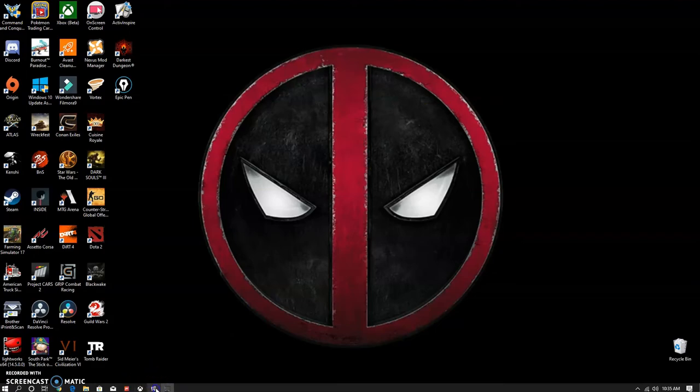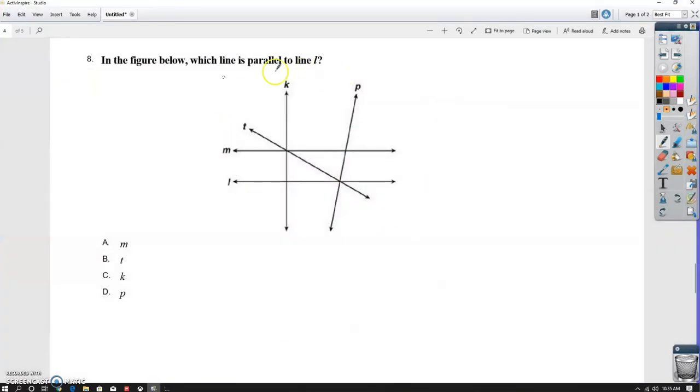A lot of times you'll see like a group of lines or line segments thrown together like this, and then they want you to talk about the relationships between different lines. So that's kind of what I wanted to do today, is just kind of talk briefly about some of the relationships between these lines when they kind of throw them all together like that. It's kind of a jumbled mess.